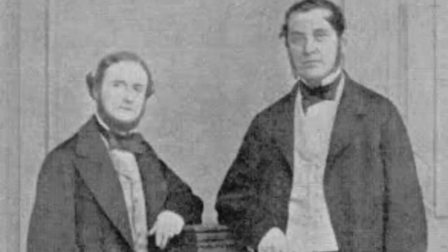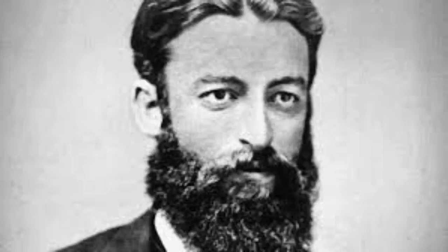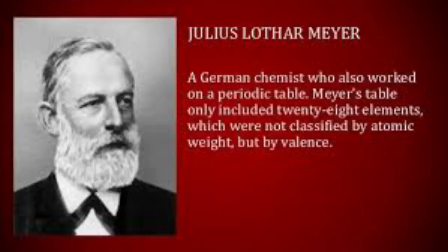He published articles about classification tables of the elements in horizontal form (1864) and vertical form (1870), in which the series of periods are properly ended by an element of the alkaline earth metal group. In 1869, Dmitry Mendeleev published a periodic table of all elements known at that time, later predicted several new elements to complete the table, and corrected some atomic weights.